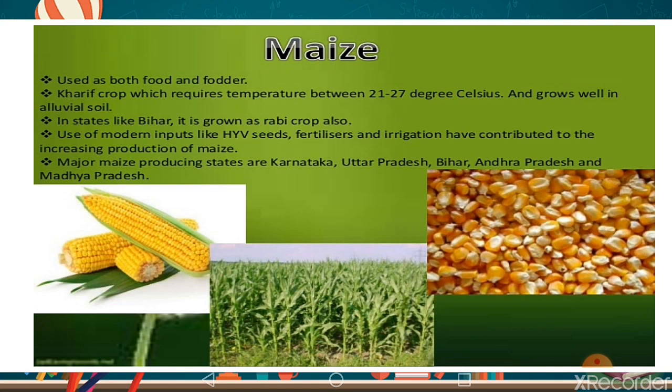Major maize producing states are Karnataka, Uttar Pradesh, Bihar, and Madhya Pradesh, which produce the most maize among all states in India.